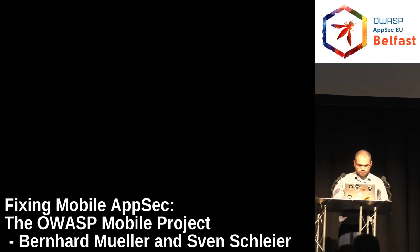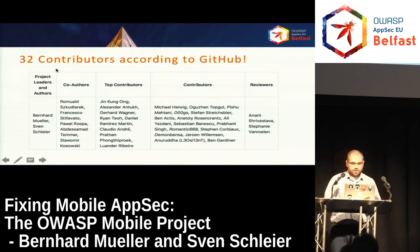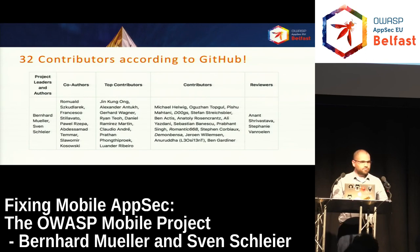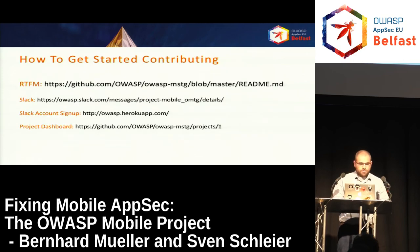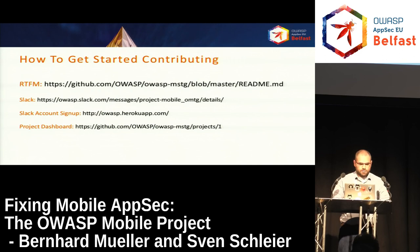At the moment we have 32 contributors in our GitHub repo — thank you, the help is really appreciated and we already have a really good document. But there's still a long way to go, especially for iOS. To get started contributing, we have a readme file in our GitHub that gives guidance. Everything is coordinated in Slack on the OWASP Slack channel. We also have a GitHub project dashboard where all missing content is an issue so we can track it and assign it to people. If you're interested, you're more than welcome to support us.